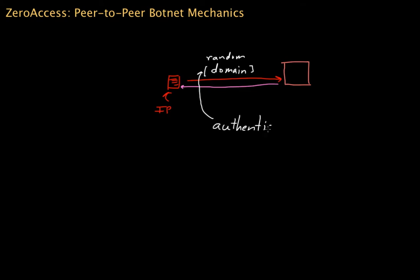This authentication token is used for authenticating the client to the server, so the server can determine if it's talking to a legitimate Zero Access client. The benefit is that client authentication reduces the risk of a security researcher reverse engineering the protocol or posing as a client. A researcher trying to interact with the server may not be able to figure out what's going on, because the server will know they haven't generated the same random domain that only the Zero Access Trojan's internal algorithm can produce.